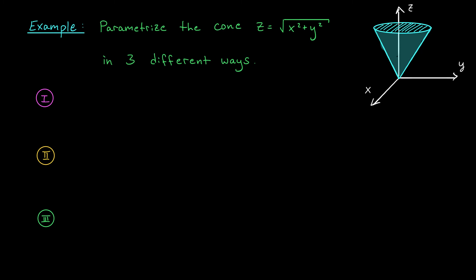To test your understanding of the content from this lesson, try pausing the video and solving the following problem. I'd like you to parametrize this cone, z equals the square root of x squared plus y squared, in three different ways. There are tons of ways to parametrize this thing, but there are three distinct approaches that I have in mind.